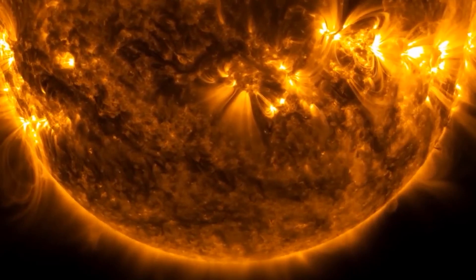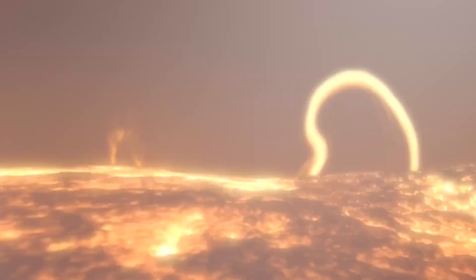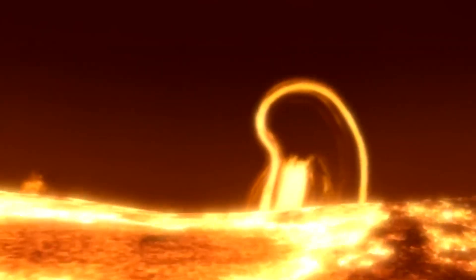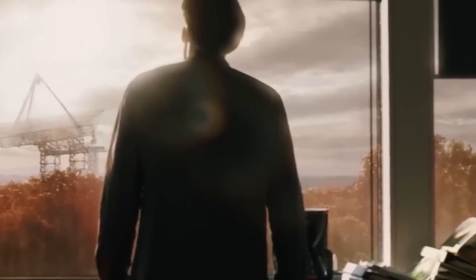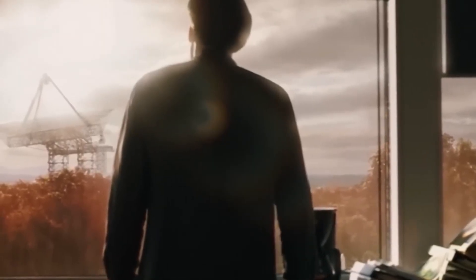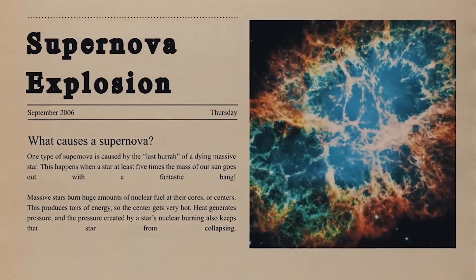Given the increase in certain types of radiation from Betelgeuse, concerns about potential threats to life on Earth are natural. However, at its current distance, Betelgeuse's supernova is unlikely to pose a significant radiation threat. Most of the high-energy gamma rays and neutrinos released would be absorbed or dispersed in space before reaching us.